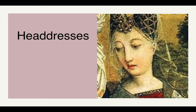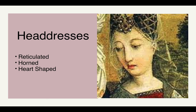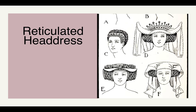A major change in women's fashion during the early Renaissance is the extremely elaborate headdresses, which fall into five main categories: the reticulated, the horned, the heart-shaped, the steeple, and the turban.